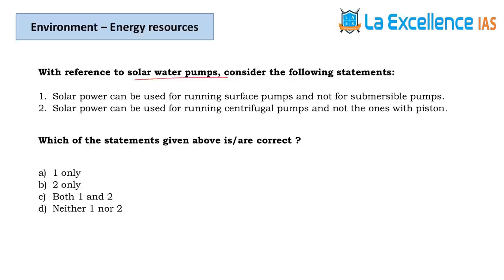The next question is about solar water pumps. Statement 1 — solar power can be used for running surface pumps and not submersible pumps. Solar power is a form of energy and can be used for any kind of pump, so this generalized restrictive statement is wrong. Statement 2 — solar power can be used for centrifugal pumps but not piston pumps. Again, it's a form of energy usable for anything. Answer is D.